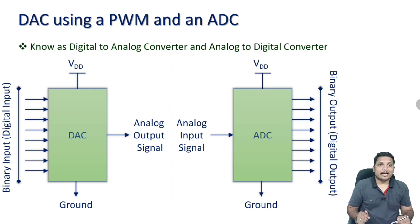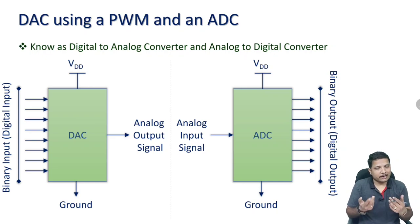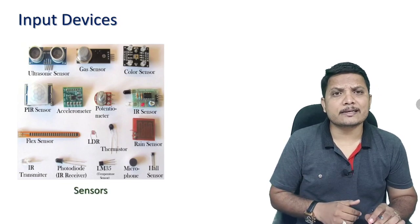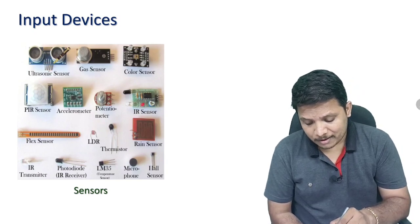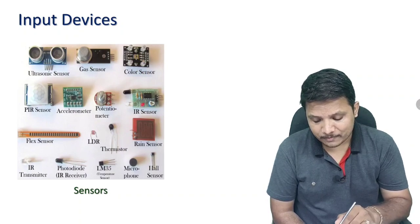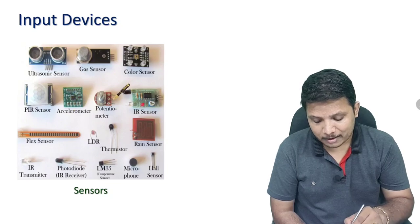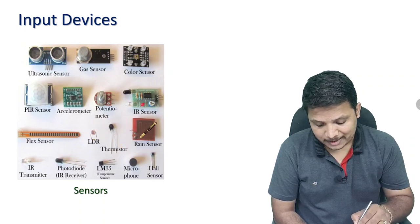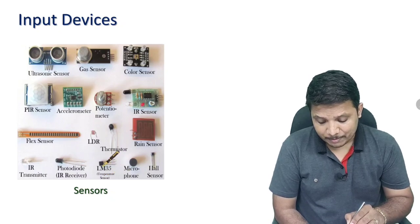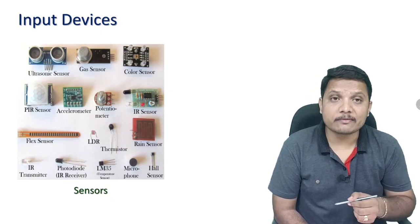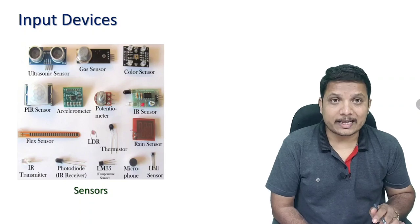There are many input devices used as sensors in embedded systems, including: ultrasonic sensor, gas sensor, color sensor, PIR sensor, accelerometer, potentiometer, IR sensor, flex sensor, LDR, thermistor, rain sensor, hall sensor, microphone, temperature sensor, photodiode, and IR transmitter. These sensors can be interfaced with a microcontroller or microprocessor in an embedded system.